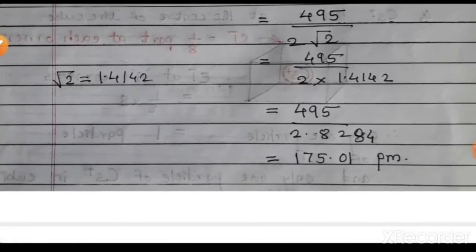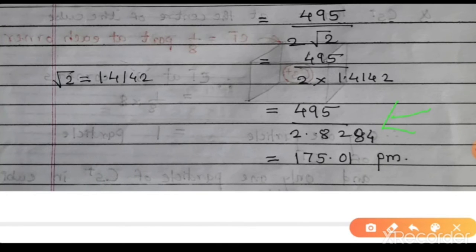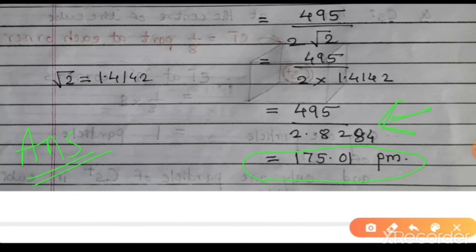Use log tables for solving numericals in the exam. By complete calculation using log tables, we get r = 175.01 pm. Therefore, the radius of the copper atom in the unit cell is 175.01 picometers.